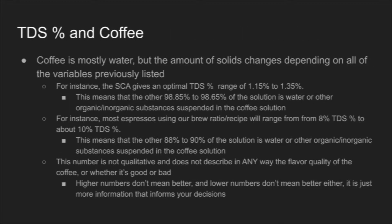If we know something is stronger or weaker, you might be wondering what the strength or concentration of coffee actually is. I give some examples in this slide. Note, though, that these are just ranges given by the SCA — the Specialty Coffee Association. You might be operating outside of some of these ranges, and it doesn't necessarily mean you're brewing coffee wrong; it's just not what the SCA would recommend.